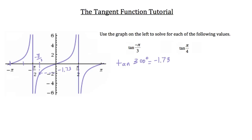For tan(π/4): we know π/2 is marked on the graph, so π/4 is half that distance. Traveling up to the graph at π/4 and then across to the y-axis gives a corresponding y-value of 1. The tangent of π/4 is the same as the tangent of 45 degrees, which is exactly 1. That's how you use a graph to find the values of a tangent function.